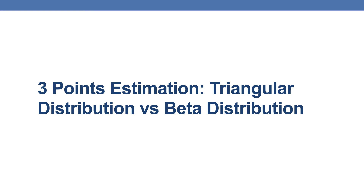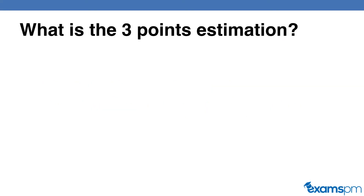Hello and welcome everyone. In this video, we are going to talk about how you can calculate the three points estimation. There are two formulas involved: the triangular distribution and the beta distribution. Before we dive into the formulas, let's talk about what three points estimation is.